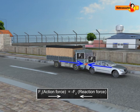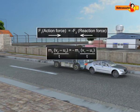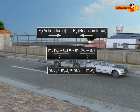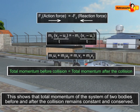According to the third law of motion, the force of action and reaction are equal and opposite. Putting the values of forces F1 and F2 and rearranging the terms, we get the required equation of the law of conservation of momentum. The left-hand side represents the total momentum of the truck and the car before collision, and the right-hand side represents the total momentum after collision. This shows that the total momentum of the system of two bodies before and after the collision remains constant and conserved.